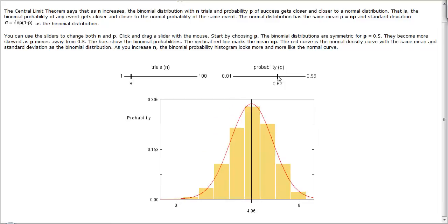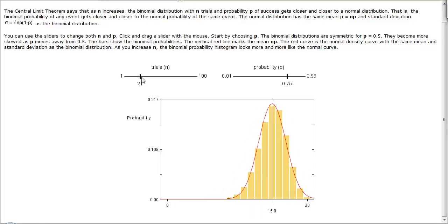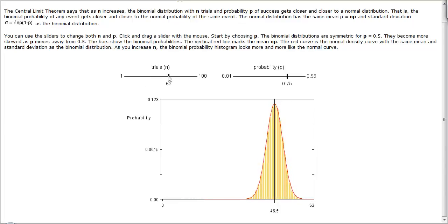When we set this up to be maybe 0.75% chance of success with 8 trials, it matches up okay, but not great. We can increase this number of trials up to 60, and we can see that we have really good matchup between the histogram and the curve. If we increase it up even further, we get an even better matchup.